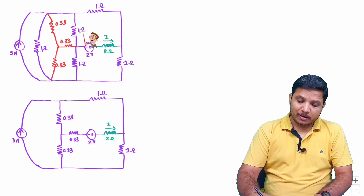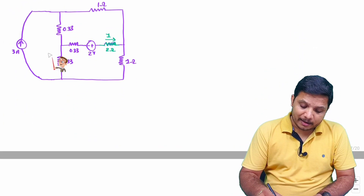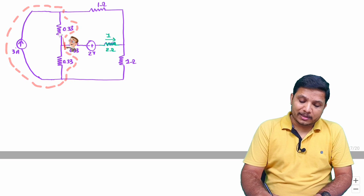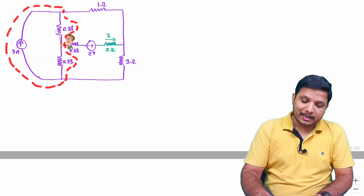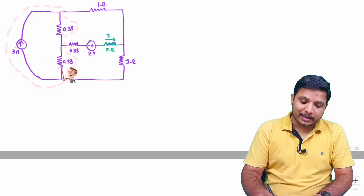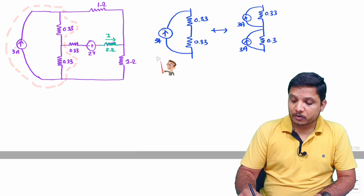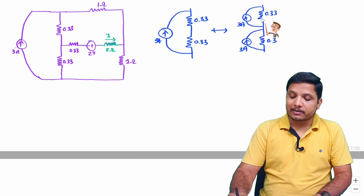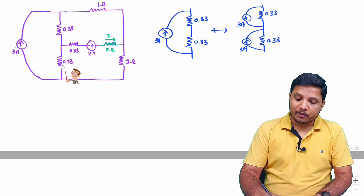I have replaced the delta connection with the star connection with values of 0.33 ohm each. For further simplification, this current source is connected across two resistors. I can apply the current distribution rule — if a current source is in parallel with a connection, I can apply that current source individually to each element.